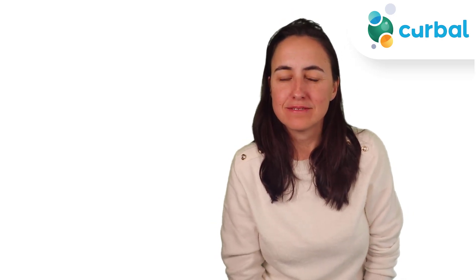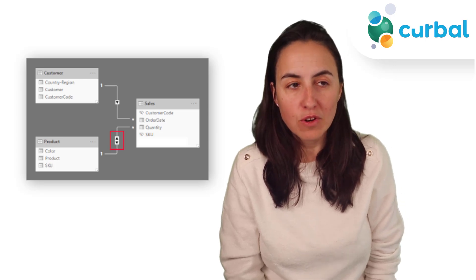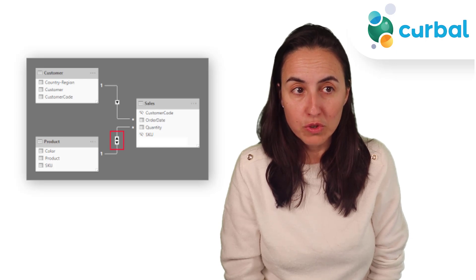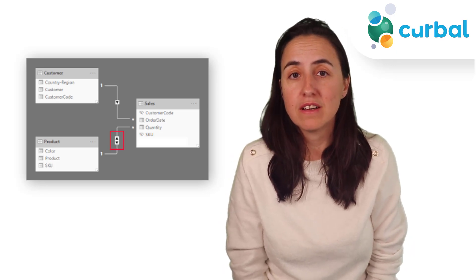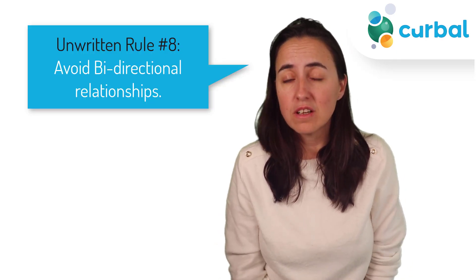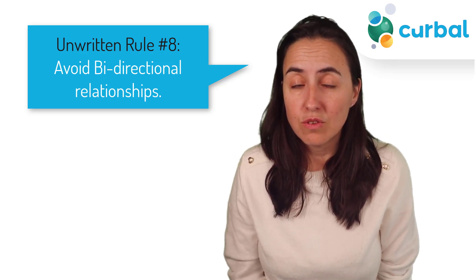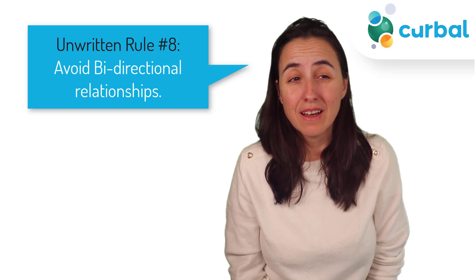One more modeling rule: bi-directional relationships everywhere, followed by 'my DAX calculations do not produce correct results.' Most likely it's because of your modeling, not your DAX skills. The unwritten rule is to avoid bi-directional relationships unless you know what you're doing — and trust me, very few people actually do. The problem is that Power BI allows and creates them by default, and there should really be an extra warning before turning them on.